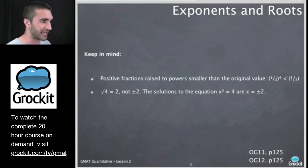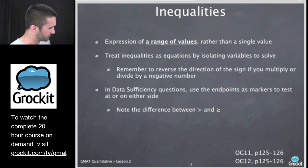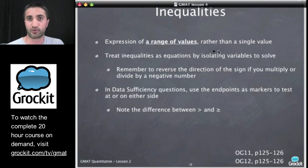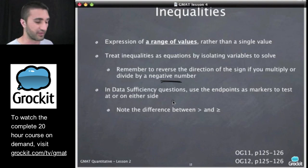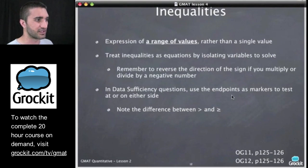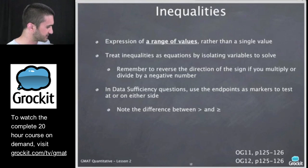Let's talk a little bit about inequalities. We should have enough time here. We have another 10 minutes. If we go over by a couple of minutes, we will. If not, we'll continue these points next week. So inequalities on the GMAT, they are an expression of a range of values rather than a single value. We want to treat inequalities as equations by isolating the variables that we have to solve. Remember to reverse the direction of the sign if you multiply or divide by a negative. And in data sufficiency questions, use the endpoints. Remember on data sufficiency questions, a lot of times we're trying to disprove something. So the endpoints of a range can be helpful in us understanding whether or not the rules of the information given will satisfy what we're being asked for. So don't forget that these are two very different things. Well, they're similar, but they're also very different. In data sufficiency questions, remember to use the endpoints as markers to test.